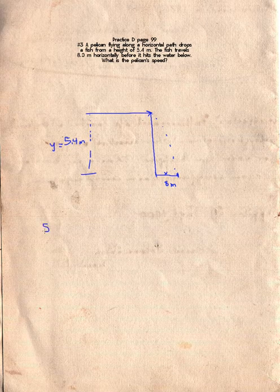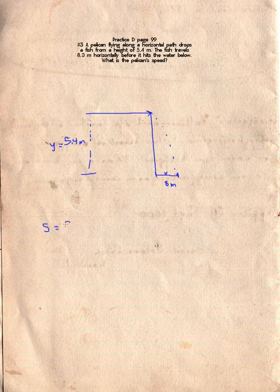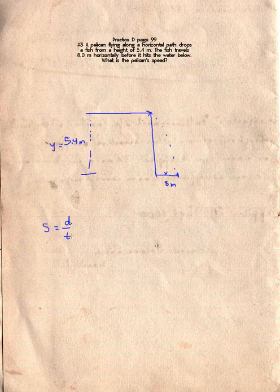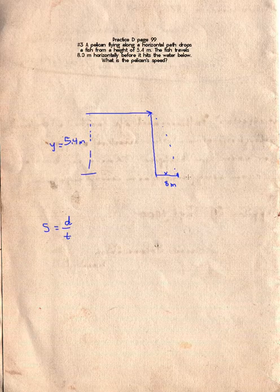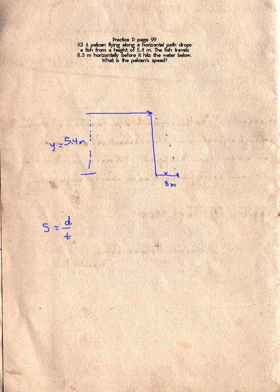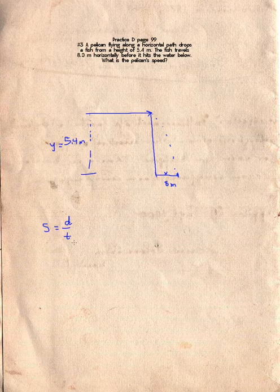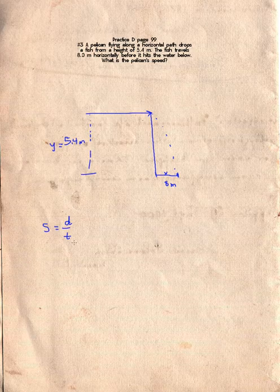Well, think about what speed is. Speed is equal to distance divided by time. So if I know the distance that the fish traveled, 8 meters, and I know the time that it took to make that 8 meters—remember my horizontal velocity remains constant—then I'll know the velocity of the fish, and the velocity of the fish is equal to the velocity of the pelican.